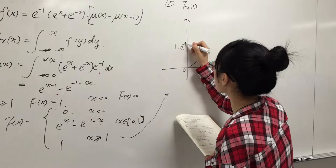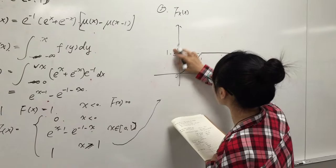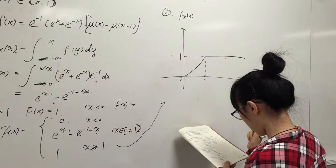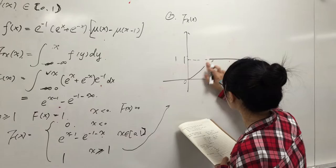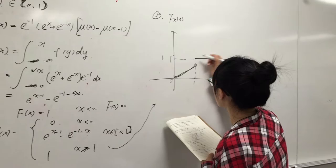The y value is 1 minus [something]. And after that, when x is larger than 1, it is equal to 1. And when x is less than 0, it will be 0.